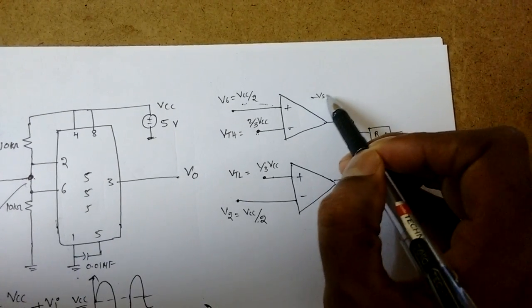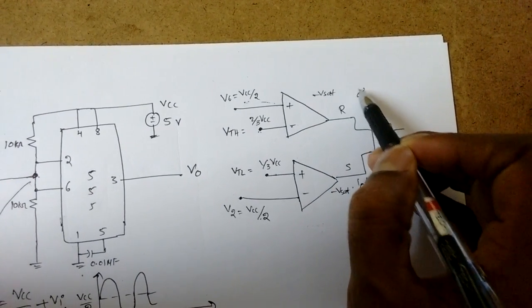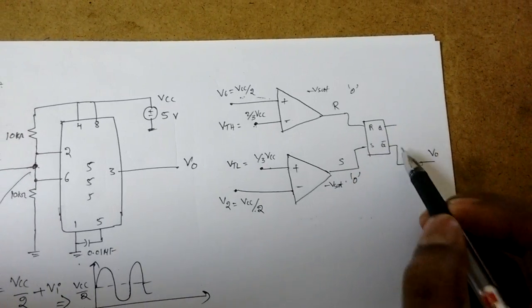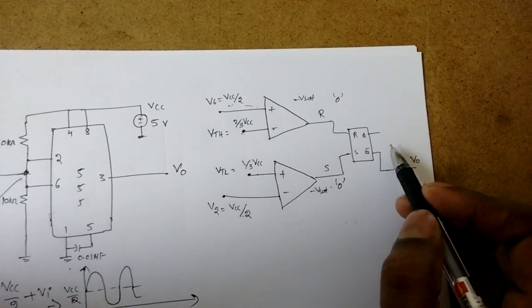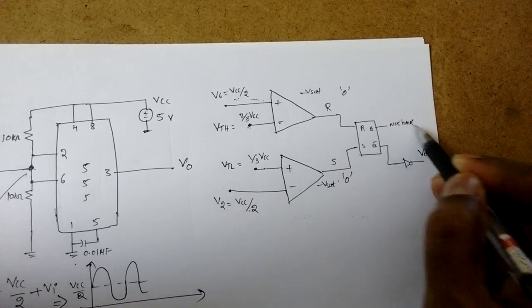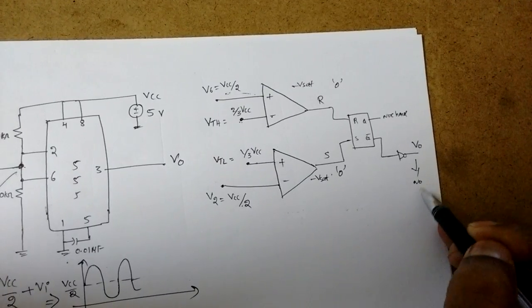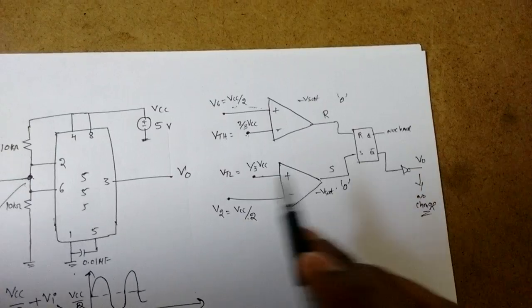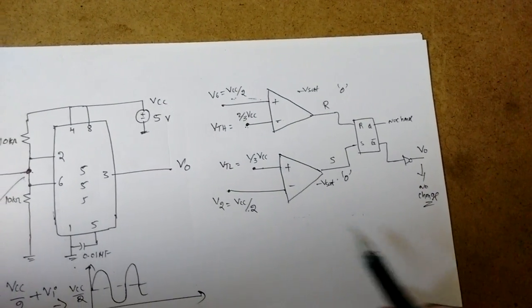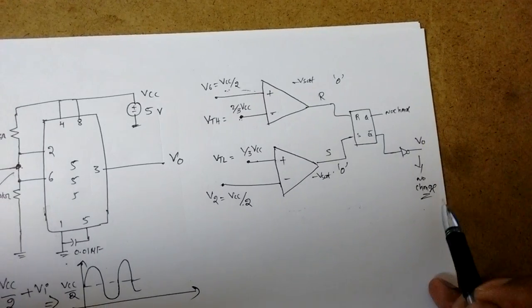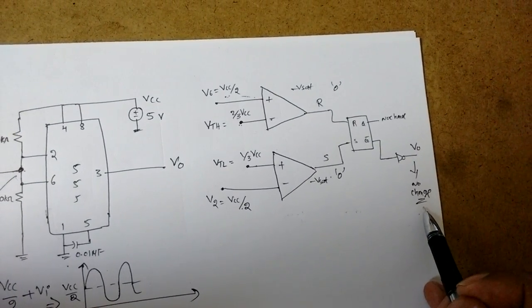Whenever R is equal to 0, S is equal to 0, SR flip-flop will have no change at the output condition. So here no change output condition. Whenever no change, output is also no change - that is it remembers the previous state. If it is logic 1 in the previous phase, it also will be logic 1 only. If it was 0, now also it will be 0. That is the previous conditions.